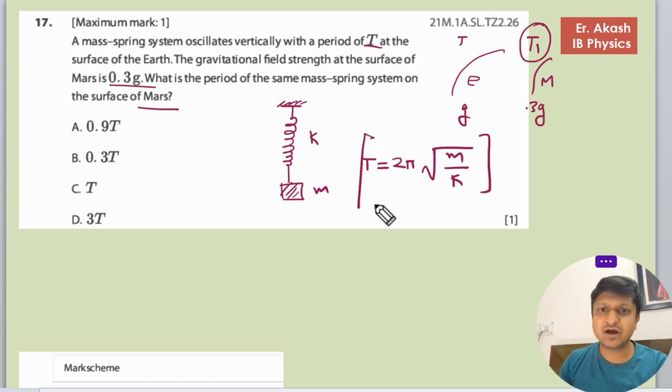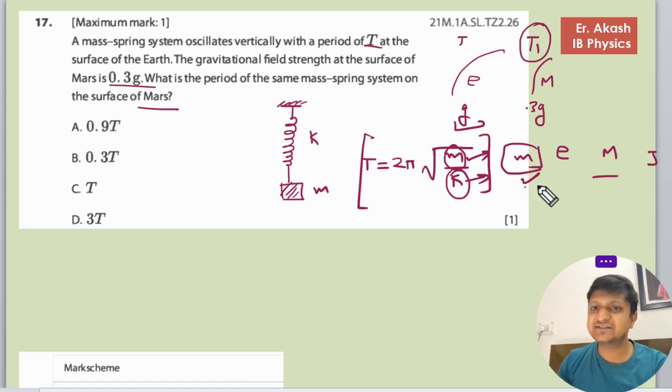So in this formula there are two quantities, two variables we can say, which are not dependent on the g. So the mass is always constant. It doesn't matter whether we are on Earth or on Mars or anywhere on Jupiter. Mass remains same. It's the gravitational field mg total that is changing, but mass always remains same.